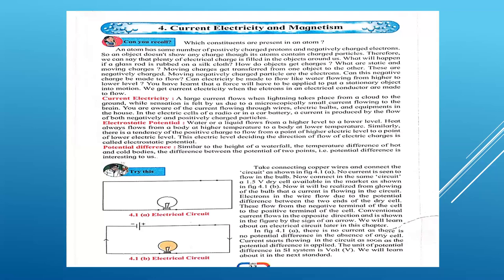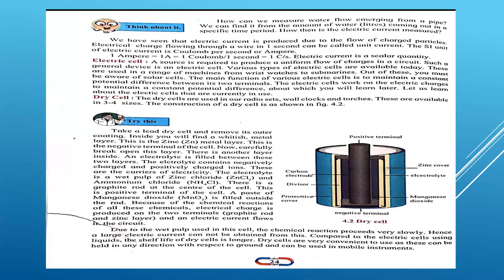Dry cells are the batteries we use in our houses — in remote controls, TV remote controls, torches, wall clocks. Whatever batteries you are using everyday, children, it is a dry cell. Now, how does it function? What is the inner structure of that dry cell? That is what I am going to explain. As you can see in your textbook page number 24, they have given the inner part of the dry cell.